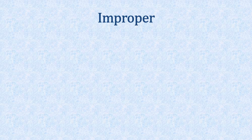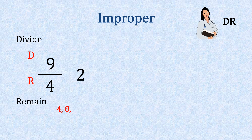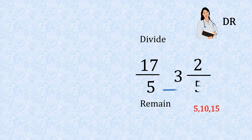Let's have another little practice with an improper fraction. DR — doctor. D for divide, R for remain. So we've got nine fourths: nine divided by four goes in twice with one left over, and the four remains on the bottom — that's two and one quarter. Then we've got 17 fifths: 17 divided by five is three, that's your whole number, with two left over, and the five remains the same.